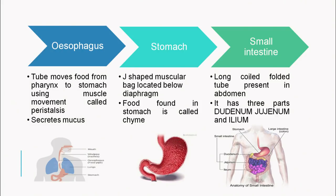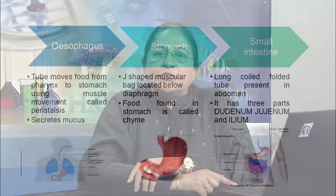After the stomach, the partially digested food moves on to the small intestine — a long coiled tube in the abdomen with three parts: duodenum, jejunum and ileum. The small intestine is around 7 meters long because here the absorption of digested food takes place with the help of special lining present in the small intestine.